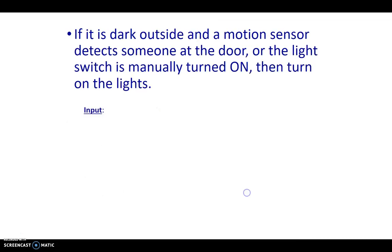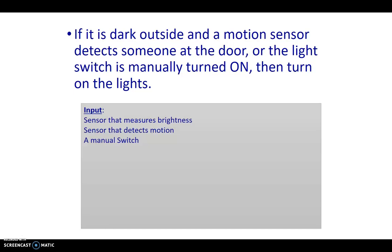Let's get a lot more complicated. I love to work outside especially when it's dark, and I don't want to have to wave my hand at the motion sensor for light. So maybe the rule is: if it is dark outside and a motion sensor detects someone at the door, or I manually turn the switch on, then keep the lights on. My inputs are a sensor that measures brightness, a sensor that detects motion, and a manual switch.